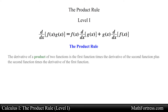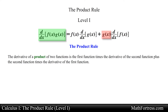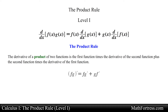The product rule says that the derivative of a product of two functions is the first function times the derivative of the second function, plus the second function times the derivative of the first function. In prime notation the product rule can be written as: the derivative of f times g equals f times g prime plus g times f prime.